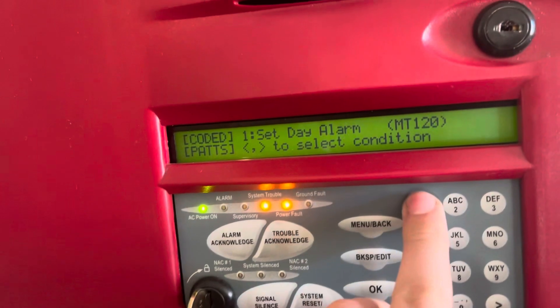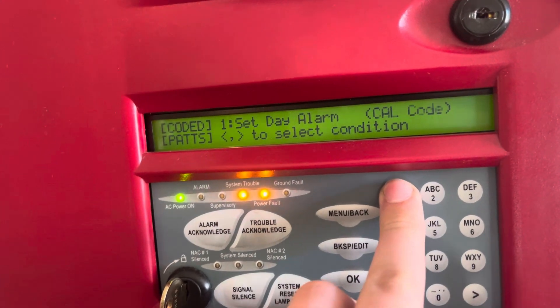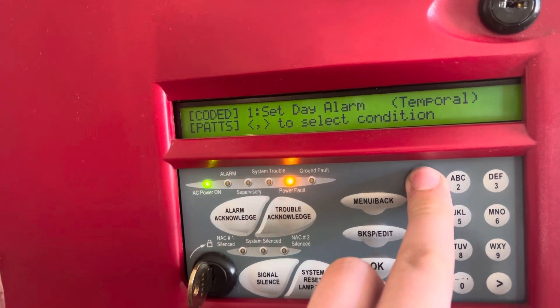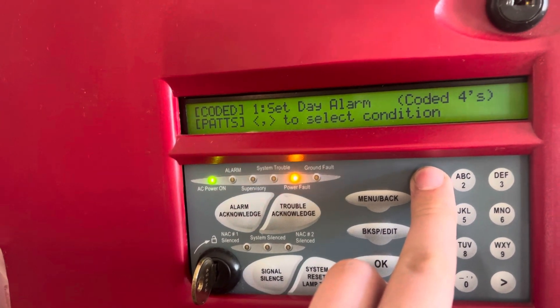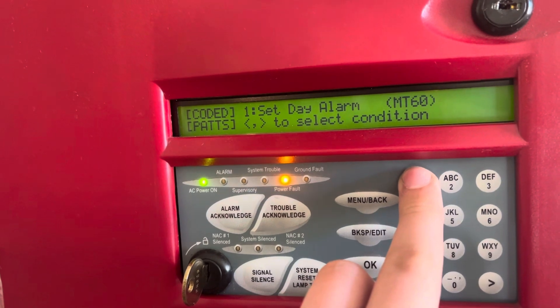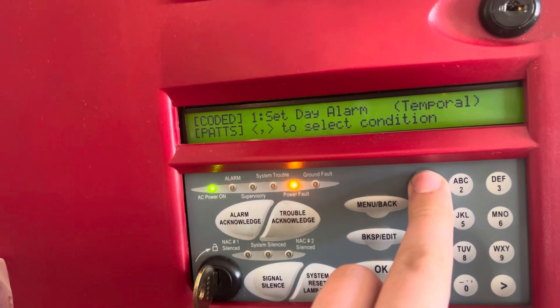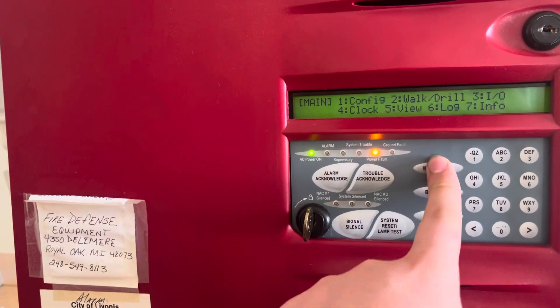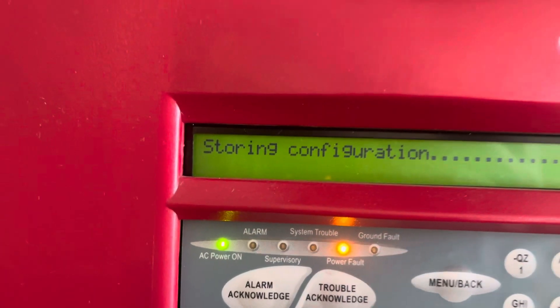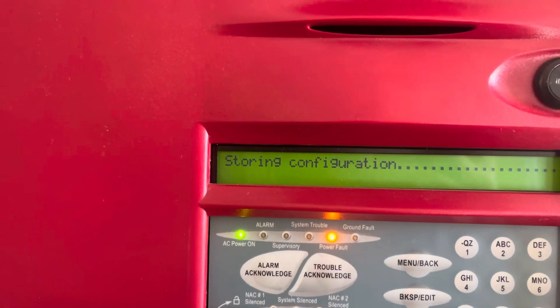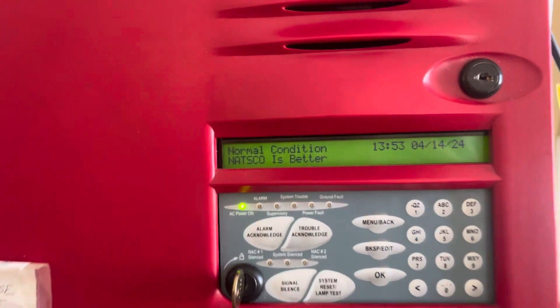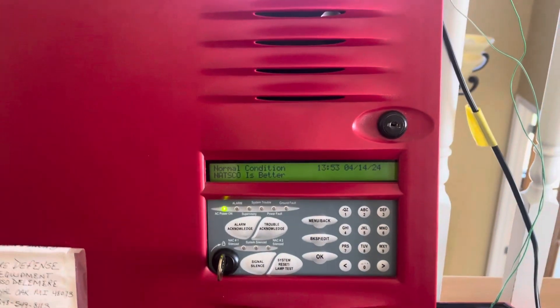So let's just put it on - I'll just do code three. So, okay, go back. It says storing configuration. You can hear some relays clicking. And then there we go. And I named the panel "Natsuka was better" because I prefer Notifier stuff over this, but I mean for dirt cheap can't really go wrong with any panel.